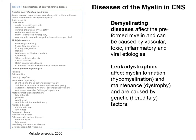There are both demyelinating diseases and leukodystrophies. Demyelinating diseases affect preformed myelin and can be caused by multiple etiologies such as vascular insult, toxic exposures, or inflammation. Leukodystrophies, on the other hand, affect myelin formation and maintenance, and tend to be caused by genetic or hereditary factors.